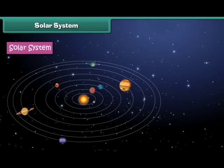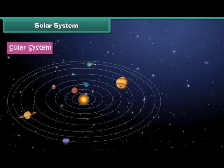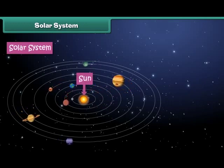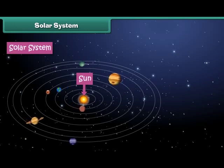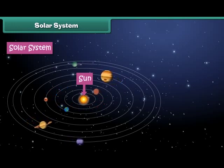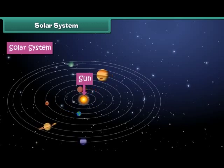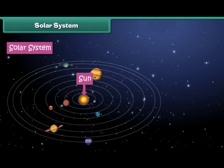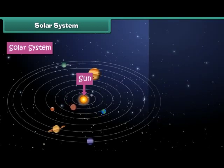We live in the solar system. The solar system is the family of the Sun and its eight planets. In the solar system, the Sun is placed at the center and the eight planets revolve around it.